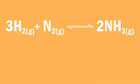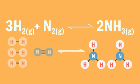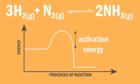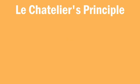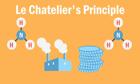Let's revisit this reaction again. Note that this is a reversible reaction and that the forward reaction is exothermic. The Haber process uses Le Chatelier's principle to maximize ammonia production while keeping operating and production costs in mind.